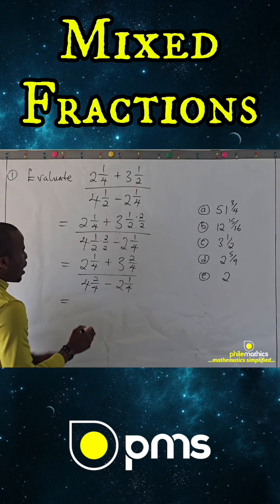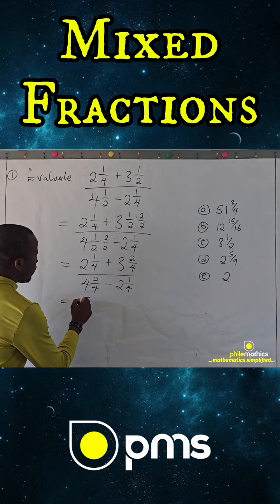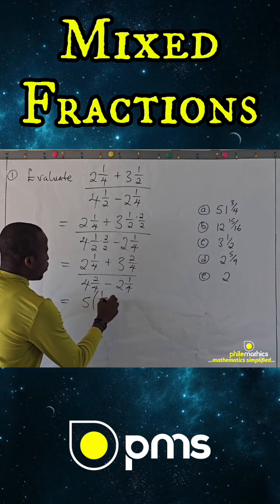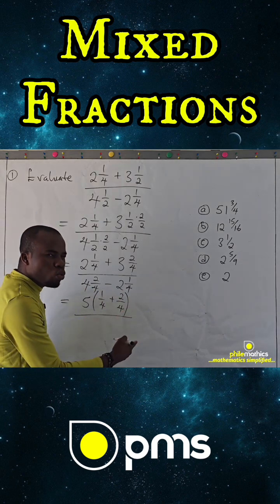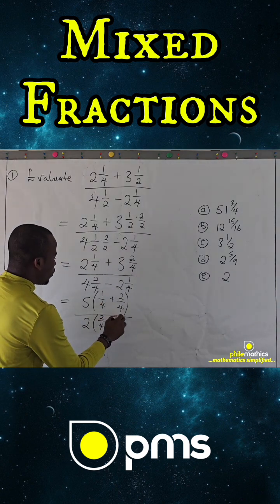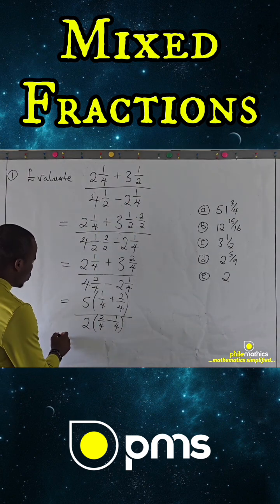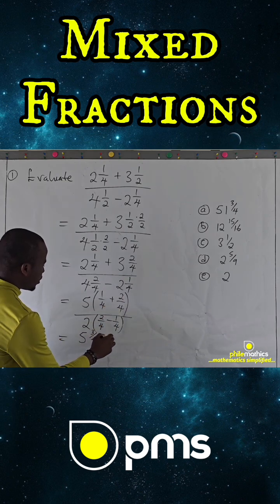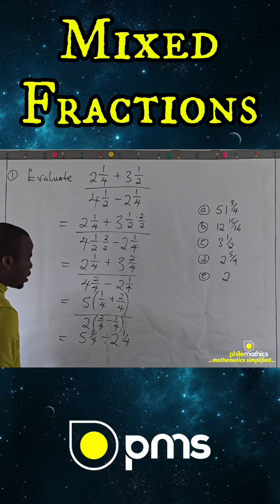For the numerator, I can add the whole numbers: two plus three is five. And one over four plus two over four is simply three over four. For the denominator: four minus two is two, and two over four minus one over four is one over four. So this gives us five and three over four, divided by two and one over four.